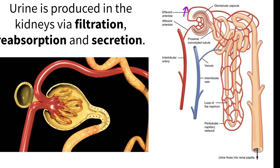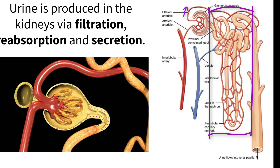It then travels through the paratubular capillary network wrapped around the tubules and loop of Henle, dropping off oxygen, exchanging, and reabsorbing solutes and water from the filtrate, which supports the process of creating the urine that is excreted.